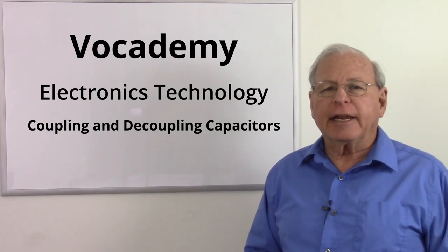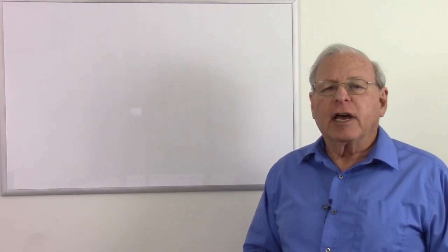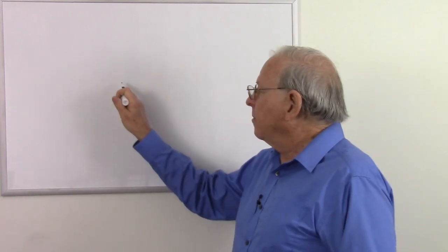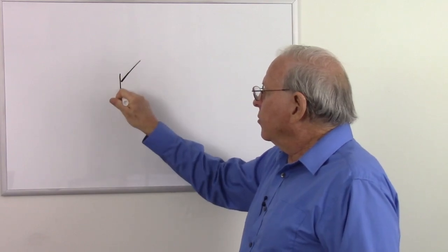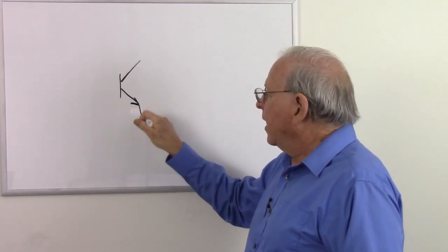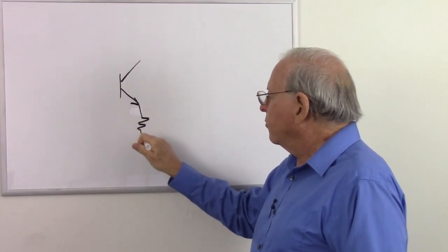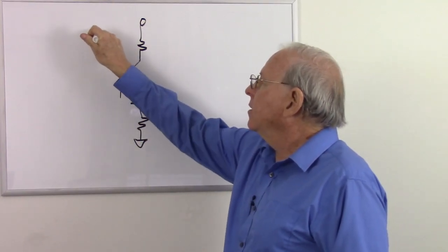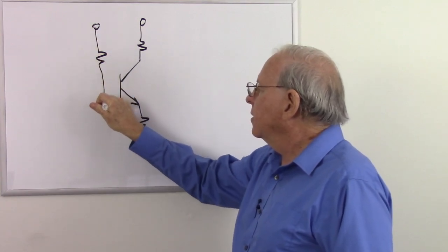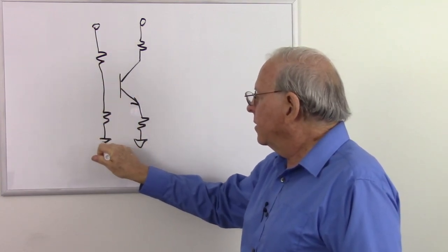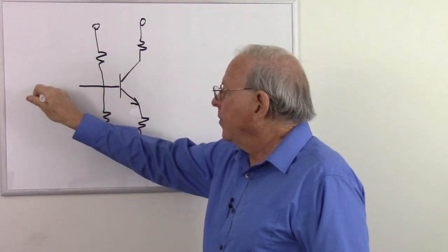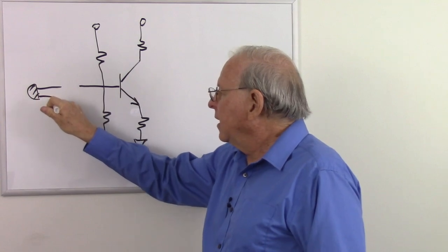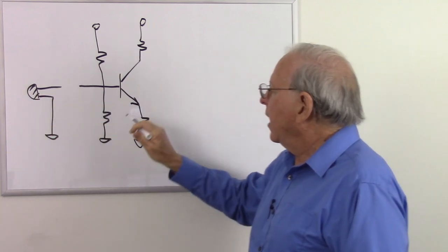Today I'm going to talk about coupling and decoupling capacitors. Coupling capacitors are used in a number of places. For example, we might find them in a simple small signal amplifier. I'll make one here with a transistor, make a common emitter amplifier.